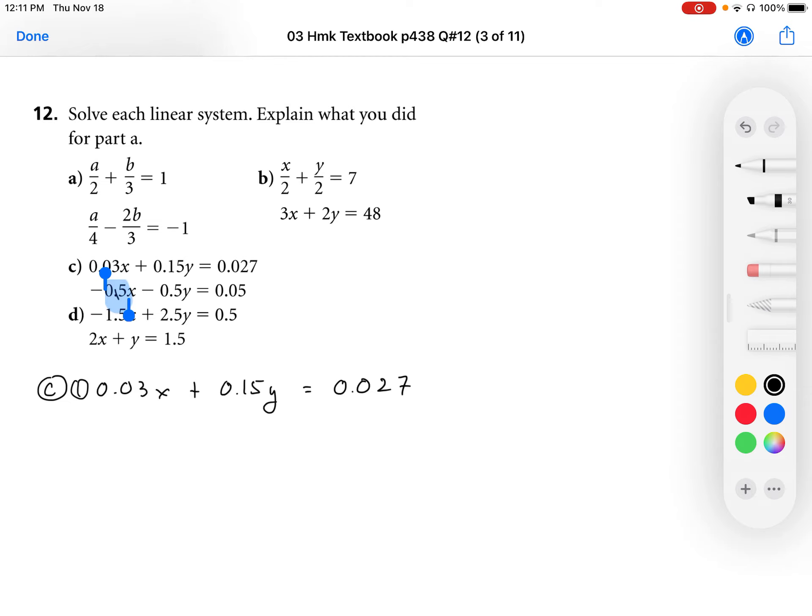So if we want to avoid the decimal, what we can do is multiply by, in this case, we can just get rid of all the decimals. We have our thousandths place here, so we can multiply everything by 1,000. That's going to give us some pretty big coefficients, but if we don't want any decimals, we can do that.